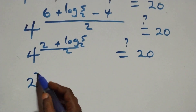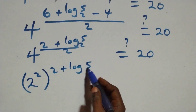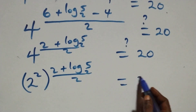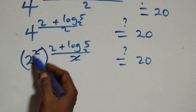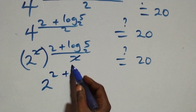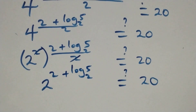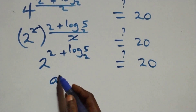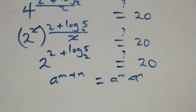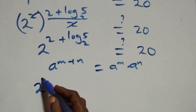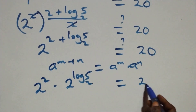We then have 4 raised to power 2 plus log base 2 of 5, all over 2, equals 20. Writing 4 as 2 squared, raised to power 2 plus log base 2 of 5, all over 2, equals 20. The powers multiply, the 2s cancel, giving us 2 raised to power 2 plus log base 2 of 5 equals 20. Applying the law of indices, a to power n plus n equals a to power n times a to power n, we get 2 squared times 2 raised to power log base 2 of 5 equals 20.